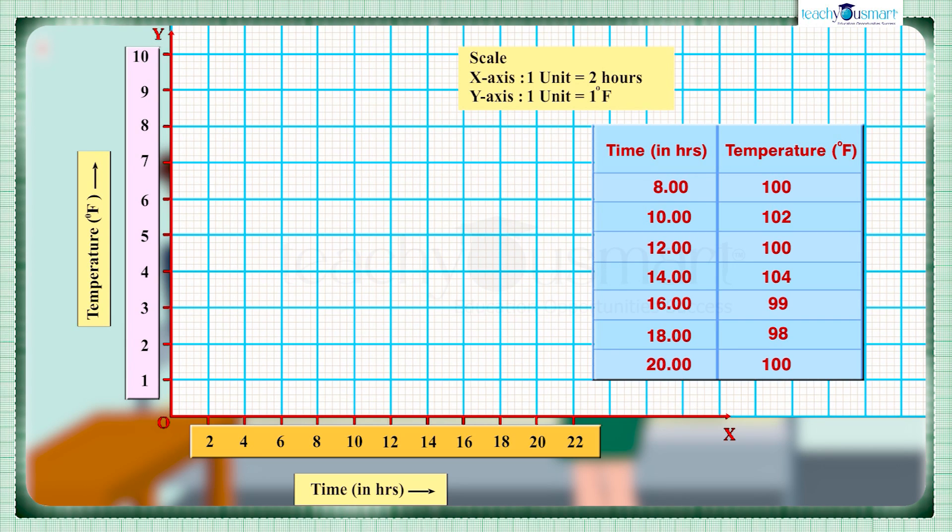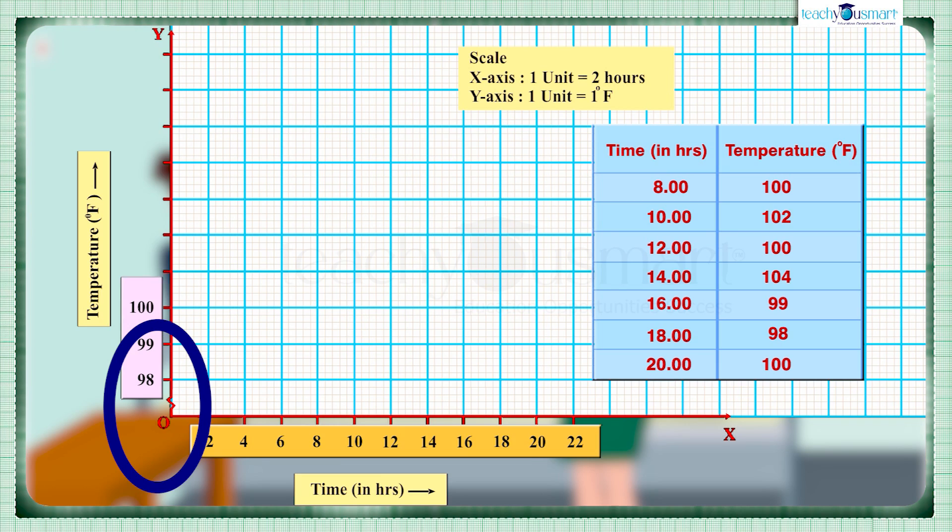But here the minimum temperature is 98 degrees Fahrenheit. If we take the values on the y-axis like this, it will waste space on the graph. To avoid this, we use a jagged line along the y-axis to indicate that we are not showing numbers between 0 and 98.